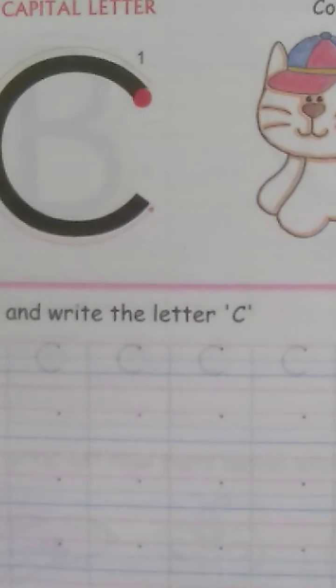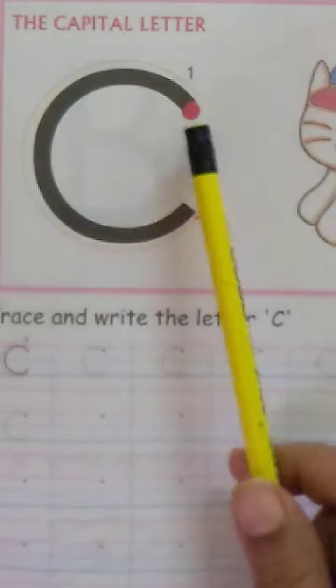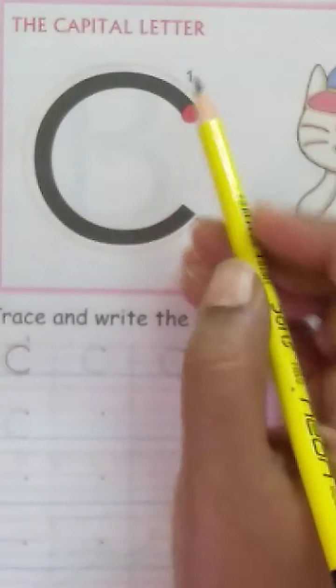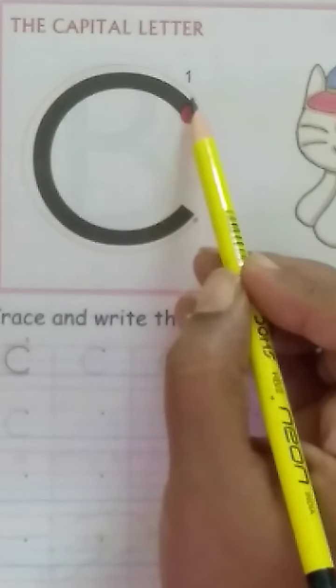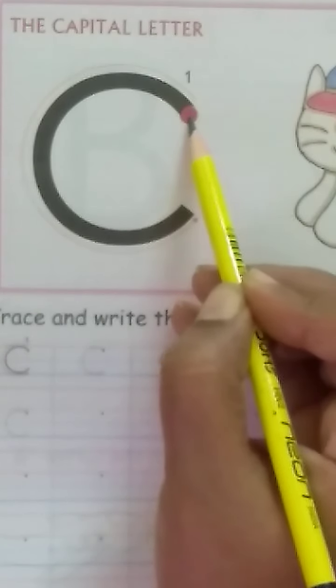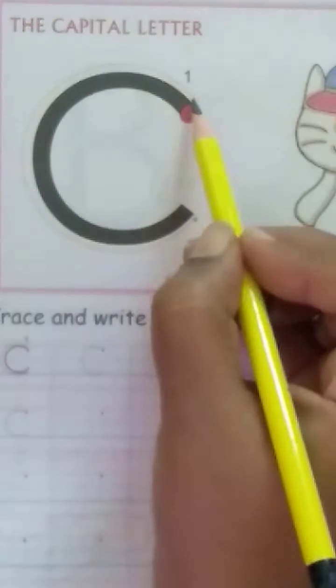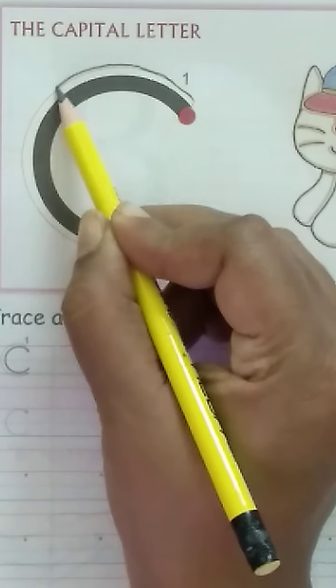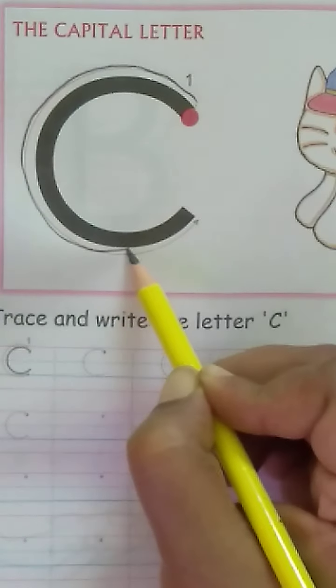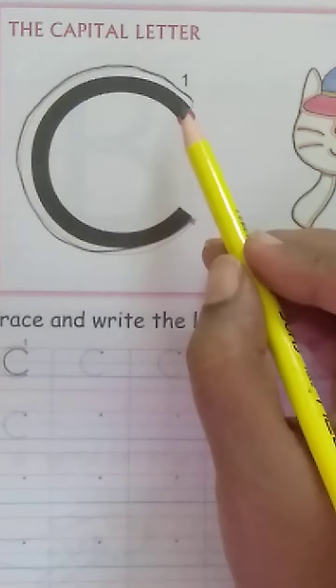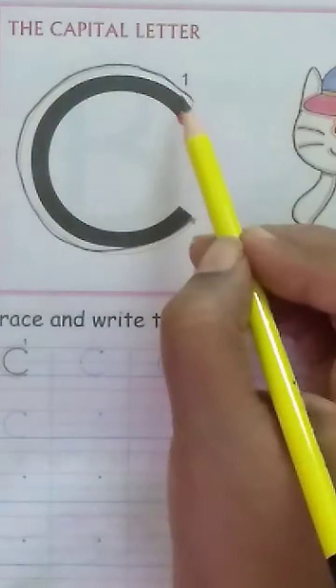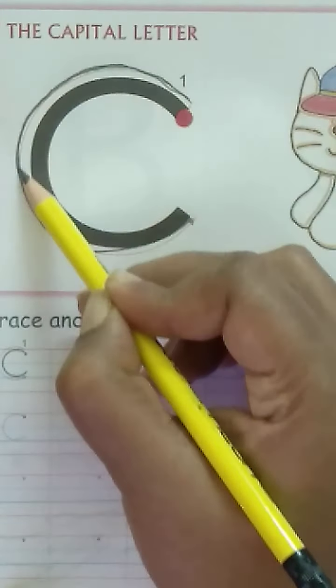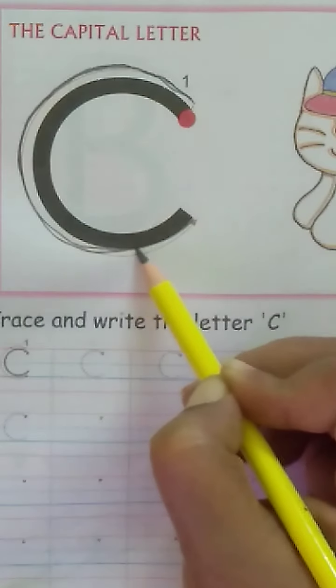Now take out your capital letters book and be ready to write the letter C. Which letter are we going to write? C. Start from the red dot and move towards the direction of the arrow like this. You are going to write a curve like this. Parents, if you feel the child needs more practice, let them first practice on this and then move towards the four line.